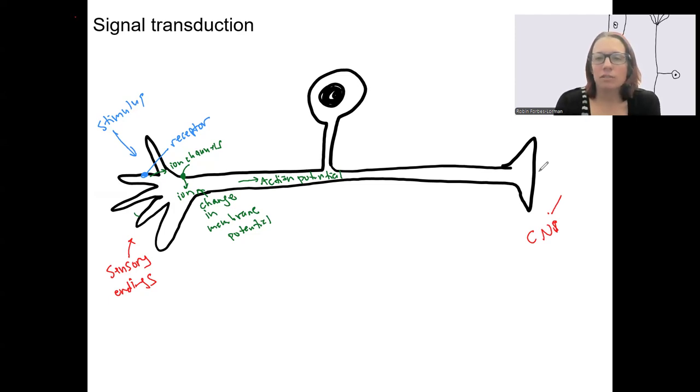The size of the stimulus is going to be proportional to the change in the membrane and the intensity, ultimately, of how we perceive the stimulus. So for example, a louder sound will be sensed as louder, and if we perceive it, perceived as louder by our central nervous system.